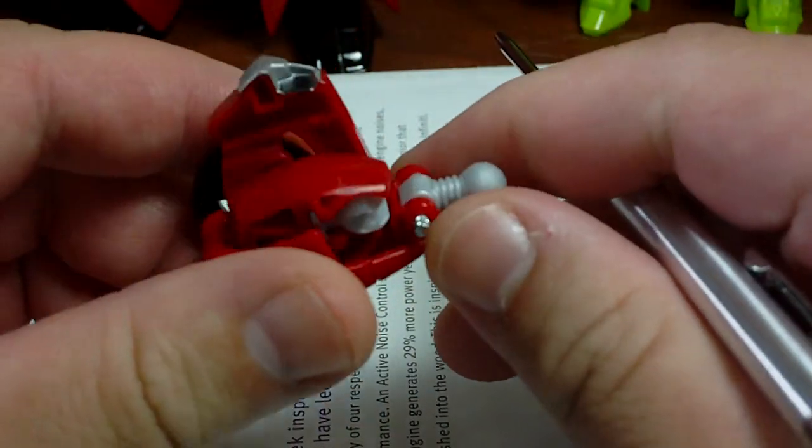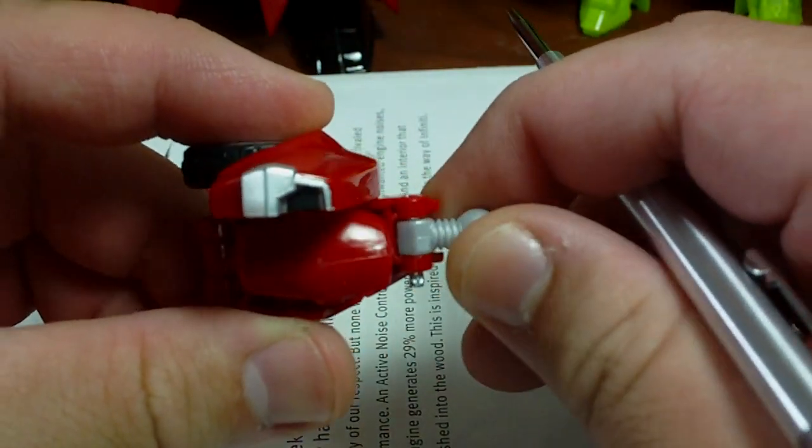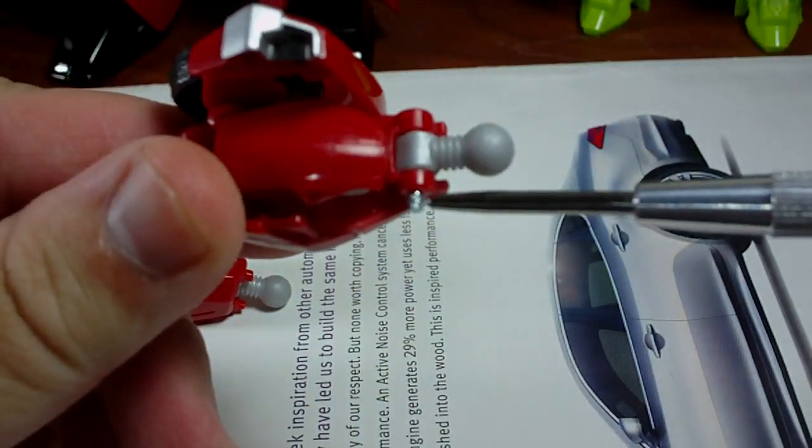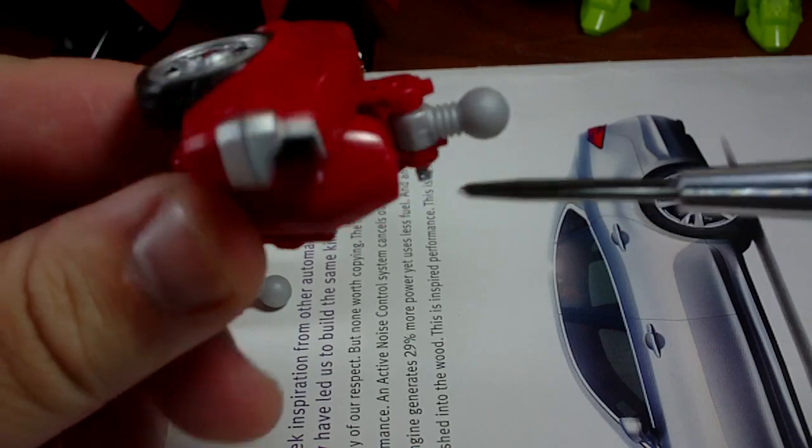Just to briefly explain it and show you an example, this is Robots in Disguise Deluxe Class Cliffjumper's leg, its lower leg and I don't know if you can make it out here but this is the metal pin that has been forced out.